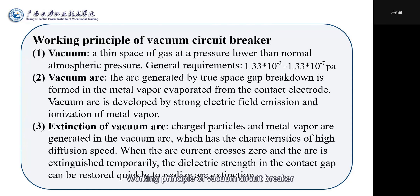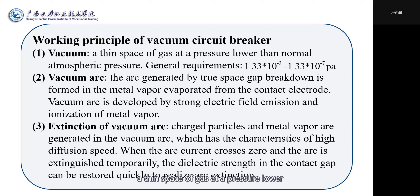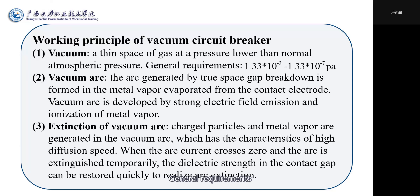Working principles of vacuum circuit breaker. (1) Vacuum: a thin space of gas at a pressure lower than normal atmospheric pressure. The general requirement is a pressure significantly below standard atmospheric pressure.